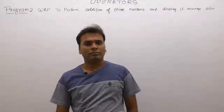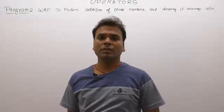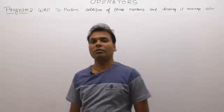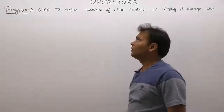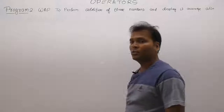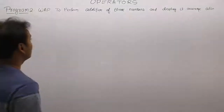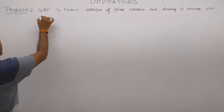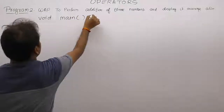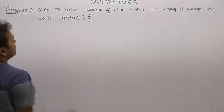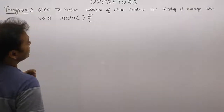Till now we are dealing with only two inputs, but in that program we are performing operations upon three inputs. This program is: write a C program to perform addition of three numbers. When the number of inputs required is three, how many inputs are required? There are three inputs from the keyboard.